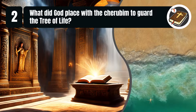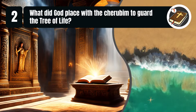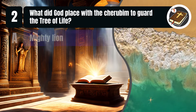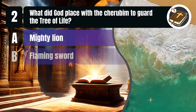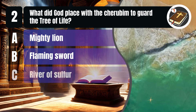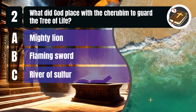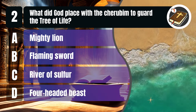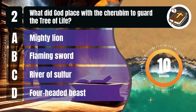Question 2. What did God place with the cherubim to guard the tree of life? A. Mighty Lion. B. Flaming Sword. C. River of Sulfur. D. Four-headed Beast. You get 10 seconds.